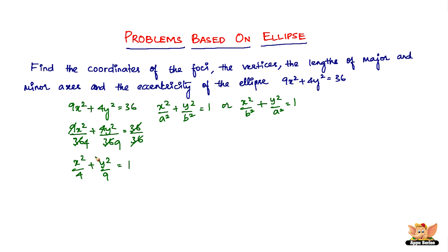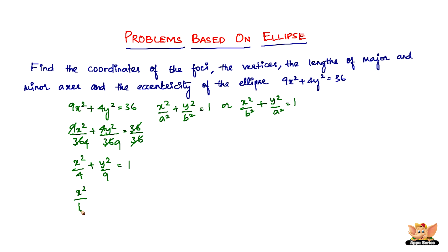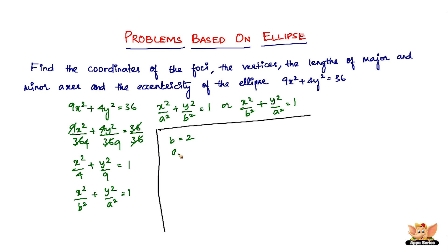Now, which standard form is this — x²/a² + y²/b² = 1, or x²/b² + y²/a² = 1? It is definitely of the form x²/b² + y²/a² = 1, because the larger denominator is always a². Here a² = 9, so a = 3, and b² = 4, so b = 2.